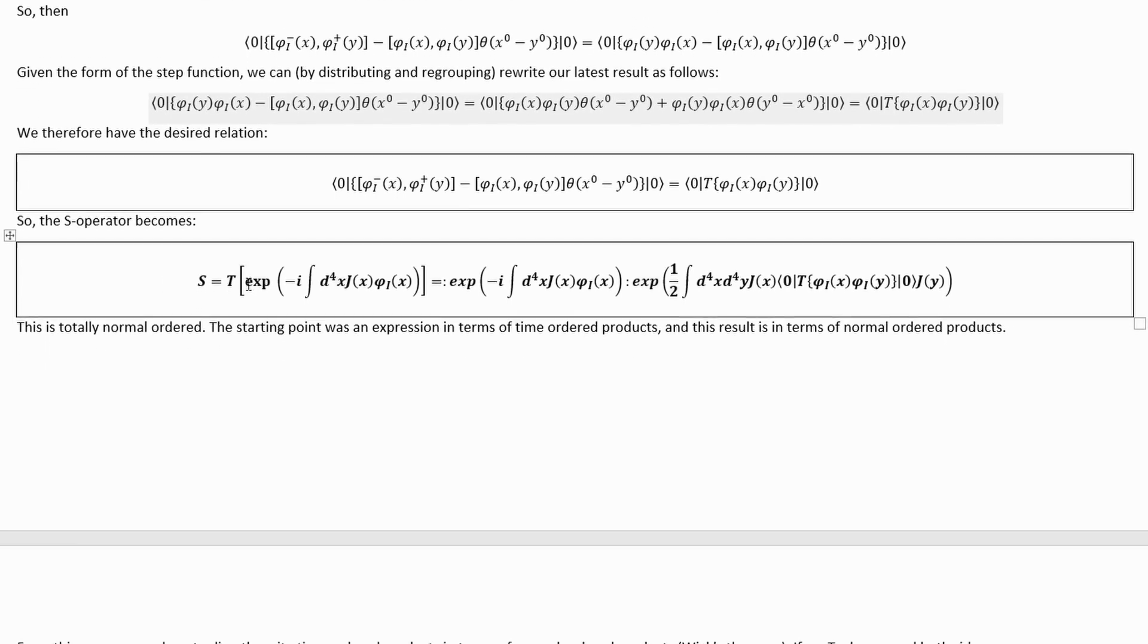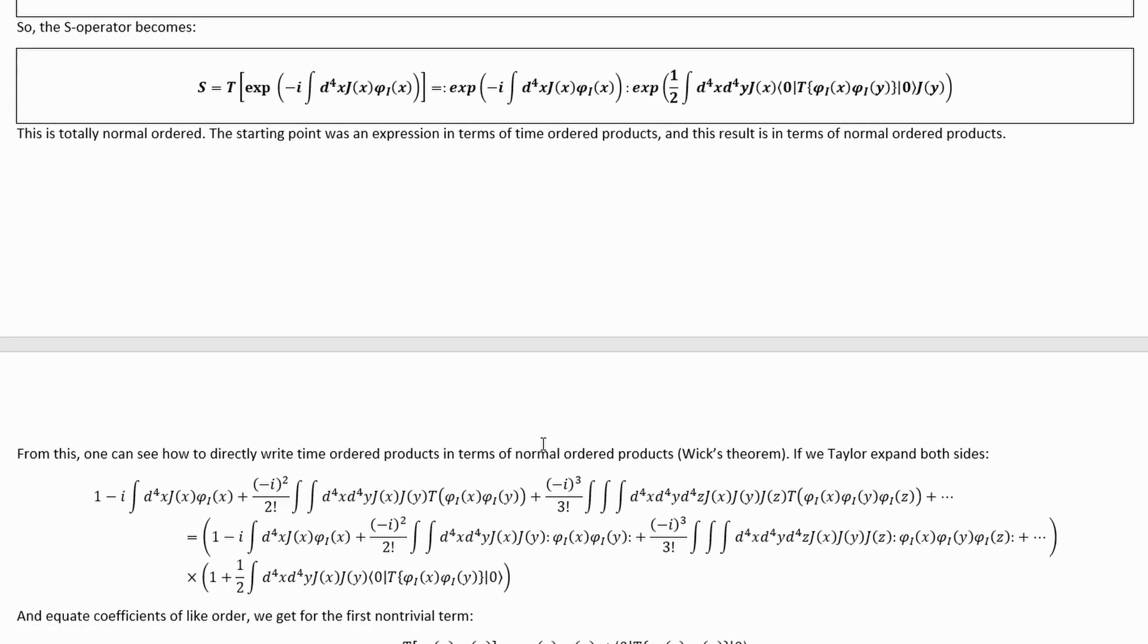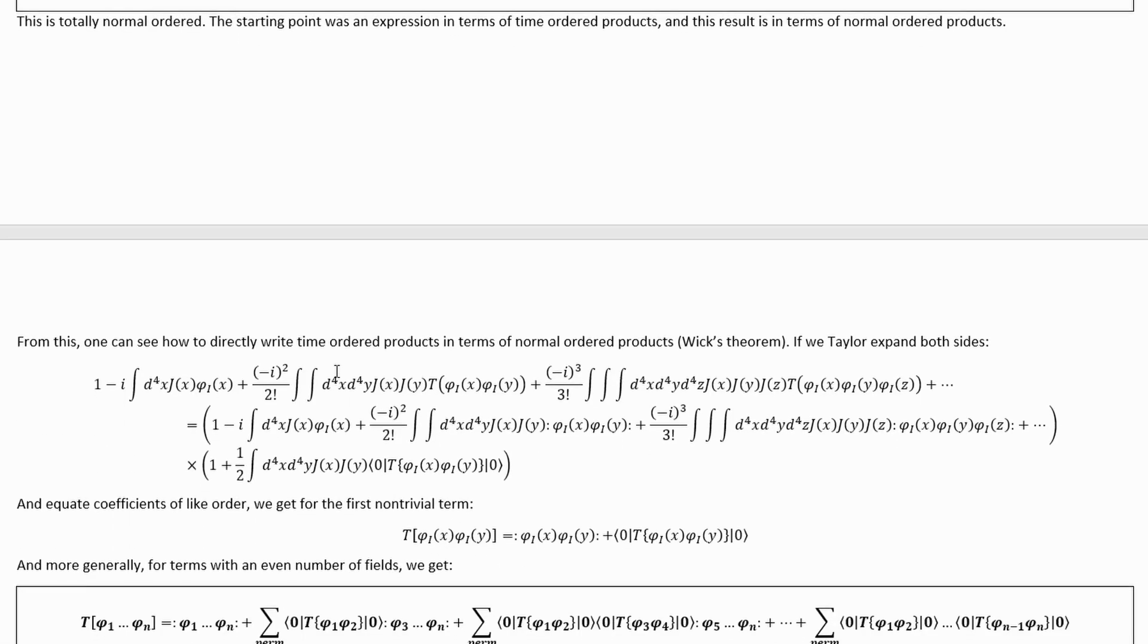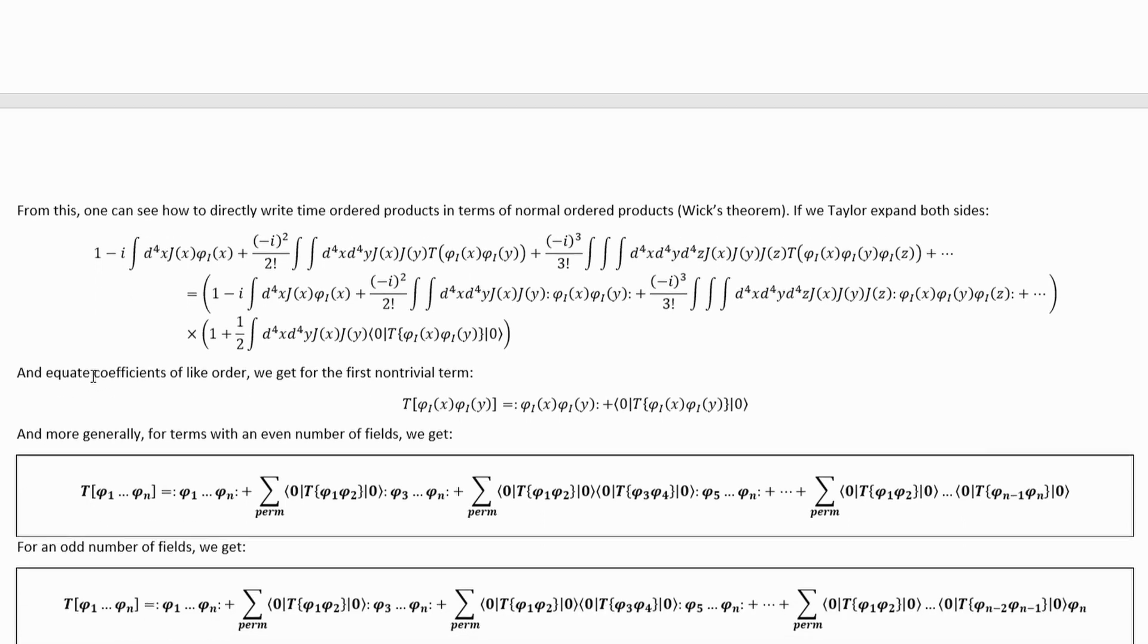Then we can plug that into the S operator, and we have finally finished re-expressing the S operator, which is a time-ordered exponential, in terms of only normal-ordered products and two-point greens functions. So then we can tailor-expand both sides of that, which looks like this. And then we can equate the coefficients on terms of like order and extract Wix's theorem.